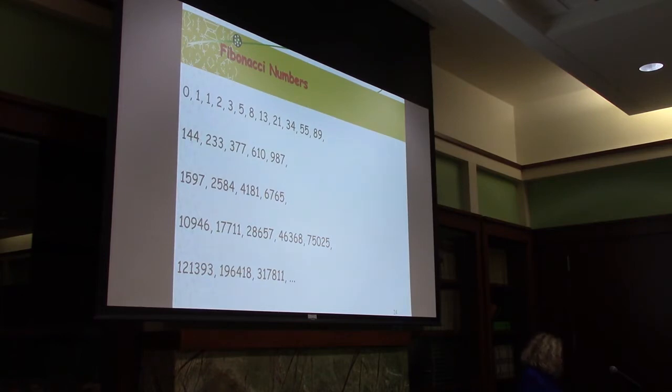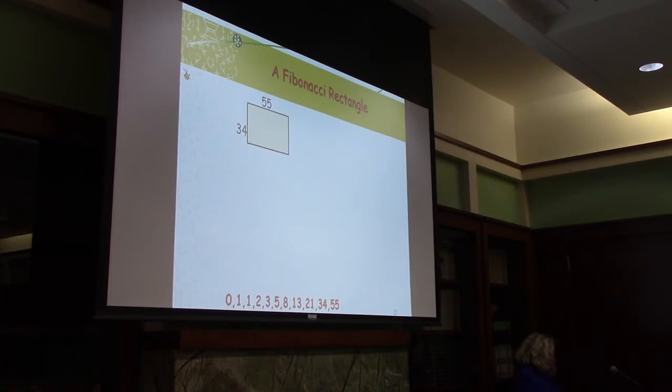The next one is Fibonacci numbers. Fibonacci numbers is a series where each number is the sum of the previous two. So 0 and 1 are random, then 1 is 0 plus 1, 2 is 1 plus 1, 3 is 2 plus 1, 5 is 3 plus 2, etc. A Fibonacci rectangle is a rectangle where the edges are two consecutive Fibonacci numbers. So 55 and 34 are the last two you see on the slide. The previous one is 34 and 21.